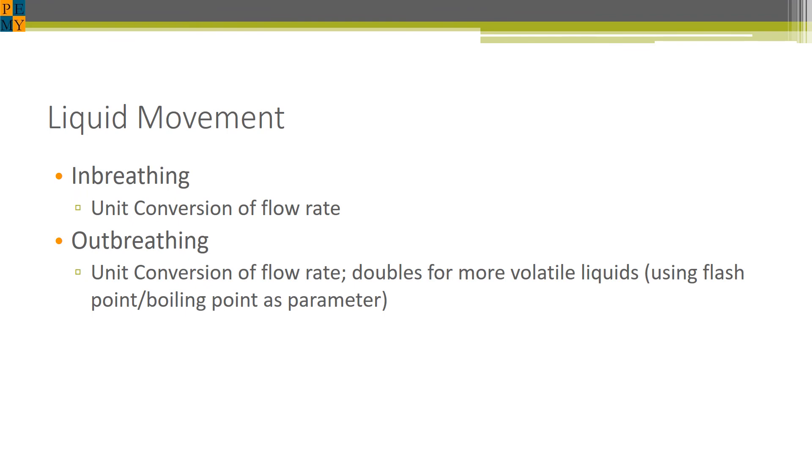Similar to the main body of API 2000, Annex A for liquid movement into and out of the tank uses a direct unit conversion of the flow rate to determine the venting requirements. Also similar to the main body, for outbreathing, the unit conversion rate is actually double for volatile liquids. Unlike the main body, which uses vapor pressure to determine whether a product is considered volatile or not, Annex A uses the flash point, which may not be as accurate, but was considered acceptable and a good enough approximation to determine whether a product was volatile or not.